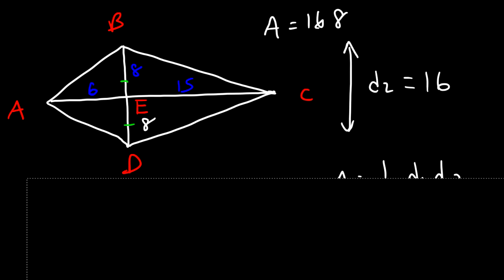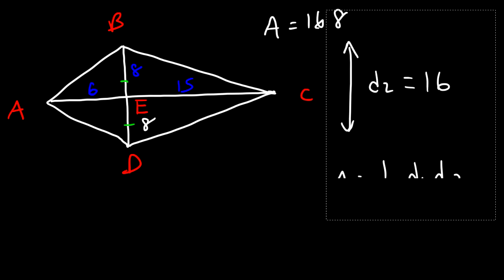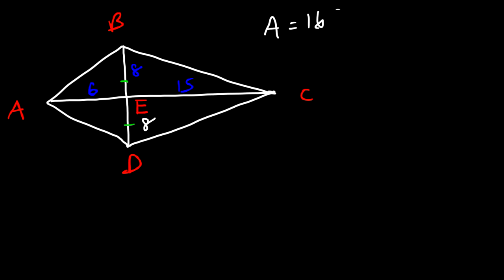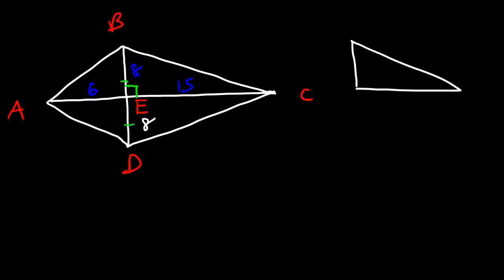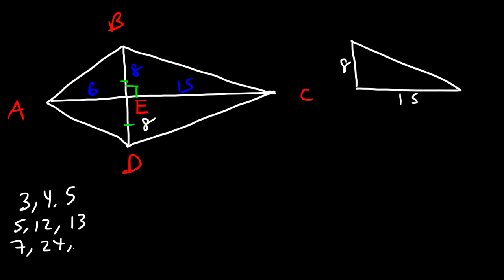Now let's calculate the perimeter. The two diagonals meet at right angles, creating four right triangles within the kite. For triangle BEC, the legs are 8 and 15. There are special right triangles to keep in mind: 3-4-5, 5-12-13, 7-24-25, and the 8-15-17 triangle.